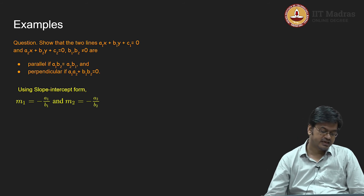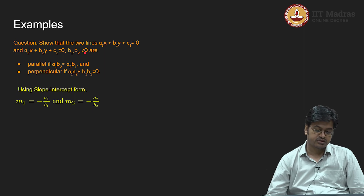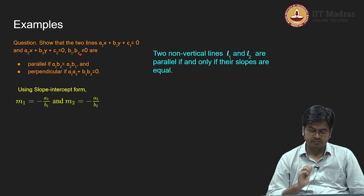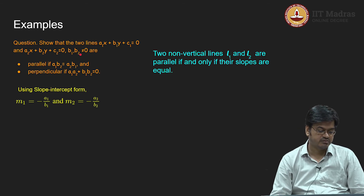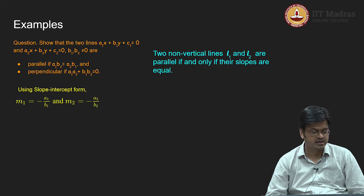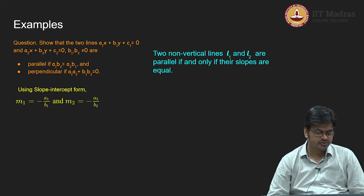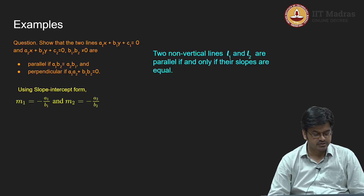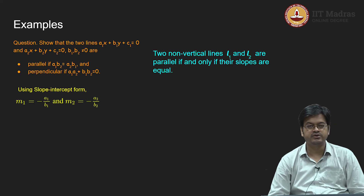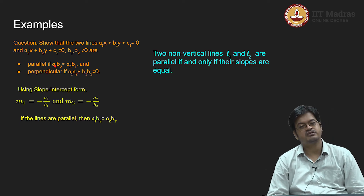Since b₁ and b₂ are not equal to 0, we are not considering vertical lines. Two non-vertical lines are parallel if and only if their slopes are equal. So, setting m₁ = m₂, the minus signs cancel and we get a₁/b₁ = a₂/b₂. Multiplying both sides by b₁b₂ (which are nonzero), we get a₁b₂ = a₂b₁. Therefore, if the lines are parallel, then a₁b₂ = a₂b₁.